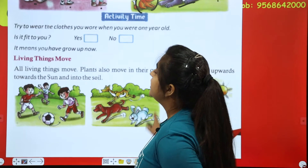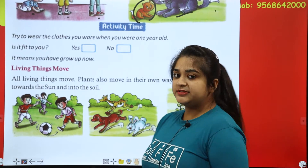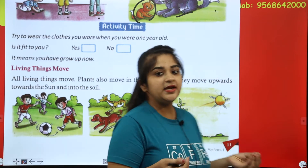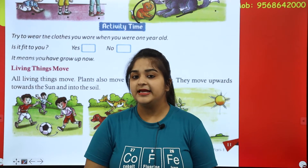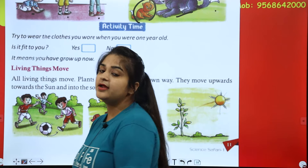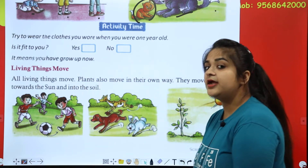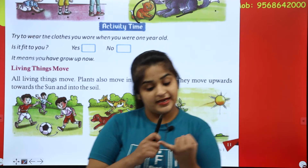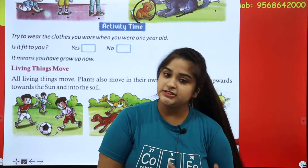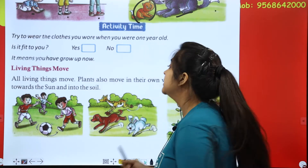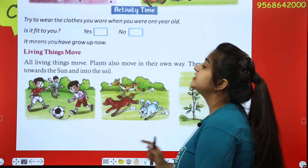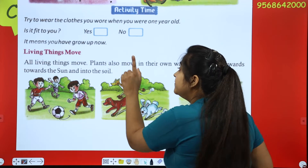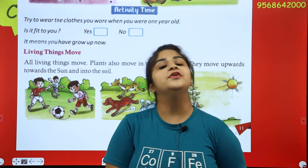Next, the fourth feature is living things move. Ma'am can move — how can you move? With the help of legs. Animals move and human beings move, all living things move. Plants also move in their own way.